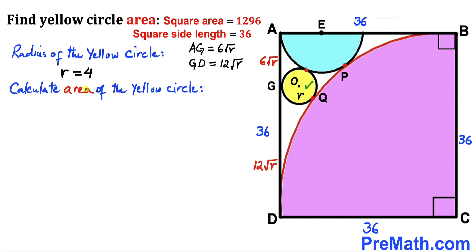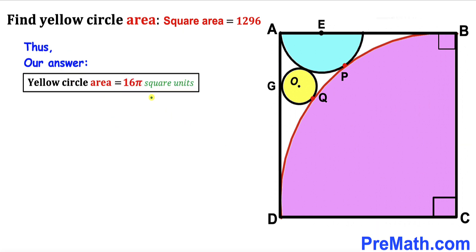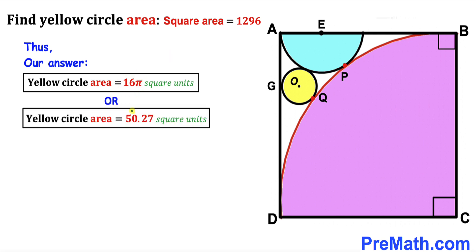Here's our final step: let's calculate the area of this yellow circle. Recalling the area of a circle formula: Area = πr². The area is π × 4² = 16π square units, which is also equal to approximately 50.27 square units.